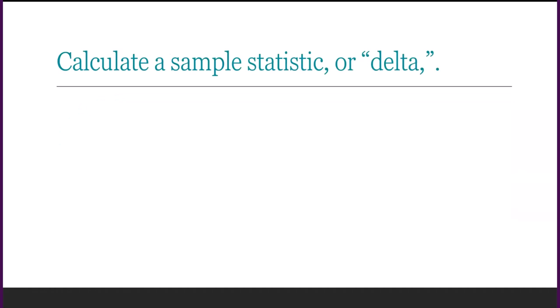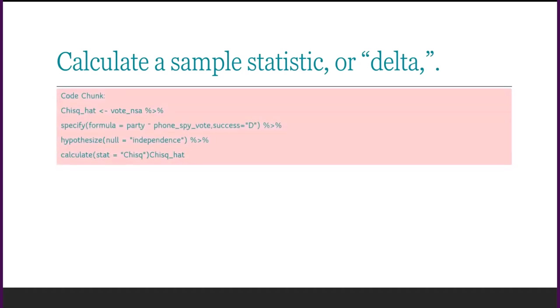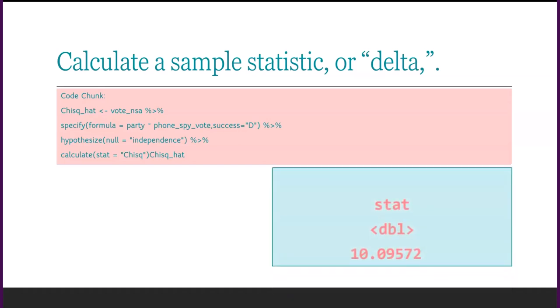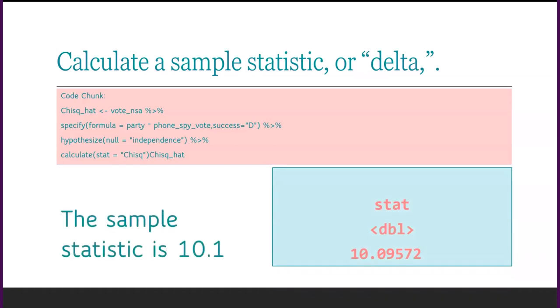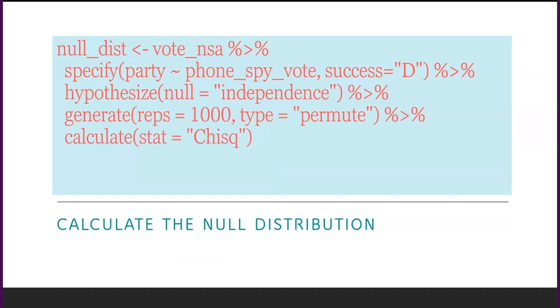The first step in the Downey and Forta process is to calculate a sample statistic, or Delta. In this code chunk, you can see I use the VoteNSA dataset and specified party and phone-spy vote. The success factor was D for Democrat, and I'm looking for the sample statistic. The chi-squared sample statistic in this test is 10.1.